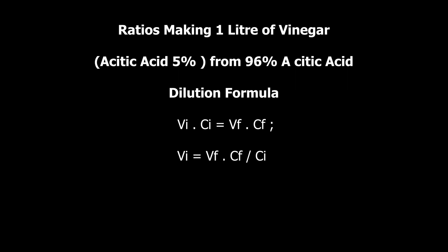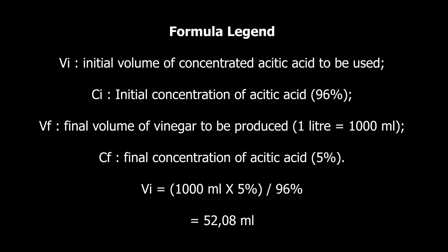We're making acetic acid at 5% from 96% acetic acid. We first need to look at the dilution formula. The dilution formula states that Vi × Ci = Vf × Cf. We rearrange to make Vi the subject of the formula, giving us: Vi = (Vf × Cf) / Ci. Let's define a brief legend for better understanding.